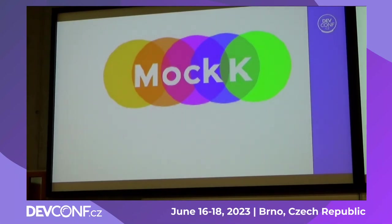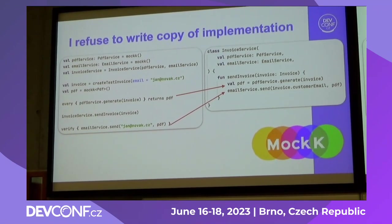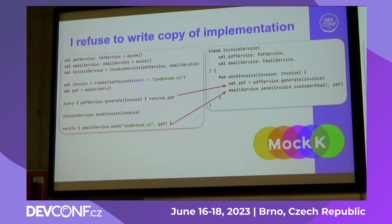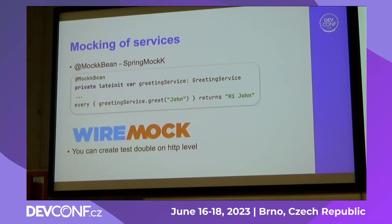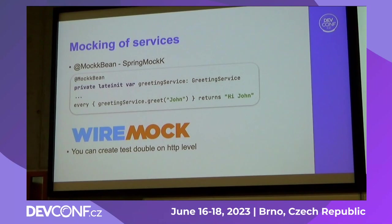MockK is great for Kotlin because in Mockito and PowerMock, you cannot mock Kotlin-specific things like ordinary functions or extension functions. But I would say I don't mock services like that — I refuse to write a copy of the implementation like I have seen in many companies. I don't believe in those tests because they are fragile. When I mock services, I use MockKBean, which allows me to replace a service in a whole Spring context easily, so I can mock a service for the database for a while or some adapter of other services.